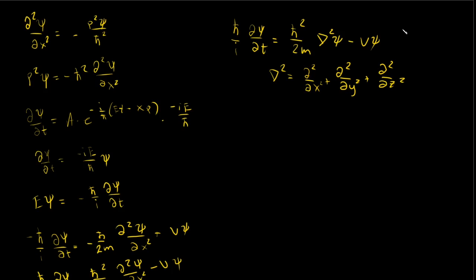Thus, the time-dependent Schrödinger equation can be derived from wave mechanics considering the equations for a particle describing SHM. This derivation has its own importance as it paves the way from classical to quantum mechanics. Thank you for watching, have a nice day!